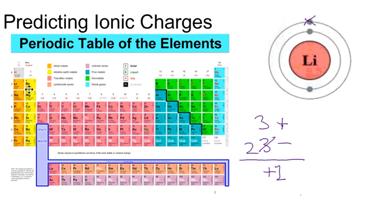Anything in group two will form an ion with a charge of plus two. Anything in group three will form an ion with a charge of plus three.